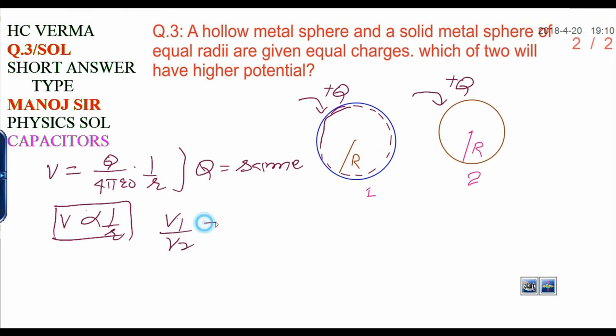You can write V1 by V2 equals R2 upon R1. You know R2 is R and R1 is also R. They will cancel out each other, and we find it equals 1. So V1 equals V2. It means both have the same potential. Thank you.